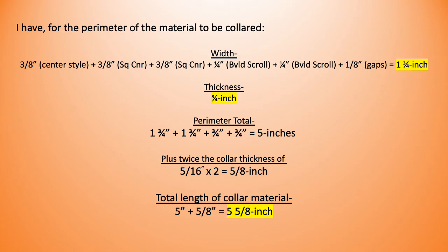So let's have a look at the math that we need. I have the center style of three eighths of an inch bar. I've got three eighths of an inch from my square corner. In my world, I actually don't. I put a taper on there to five sixteenths. But as per drawing, three eighths of an inch for the square corner bar. Square corner bar on the other side of the center style. Quarter inch for my beveled scroll. Quarter inch for my beveled scroll. And I'm calling the gaps, the sum and total of the gaps, an eighth of an inch. So I'm going to call that one and three quarter inches per side. The thickness is a standard three quarters of an inch all the way through.